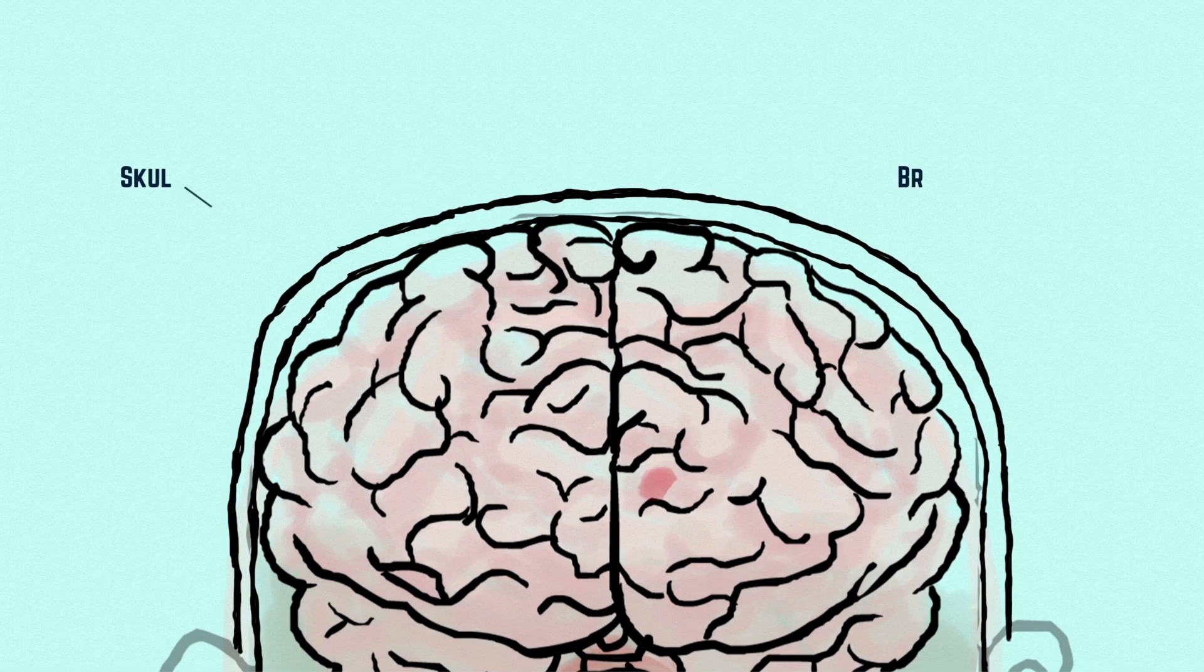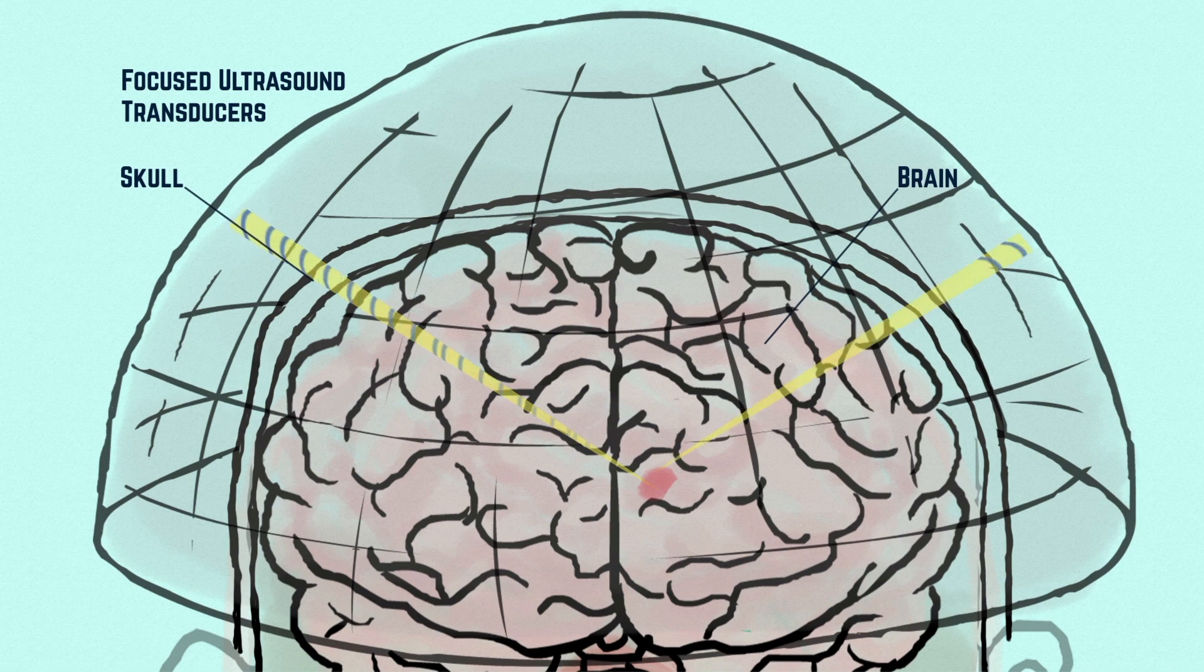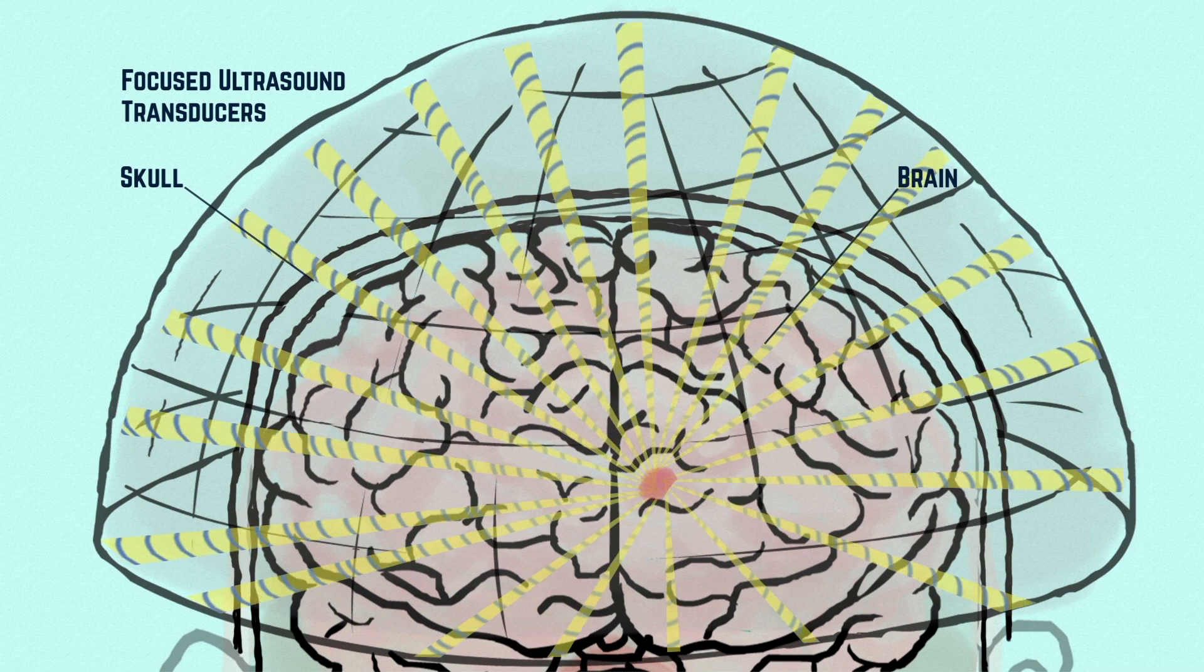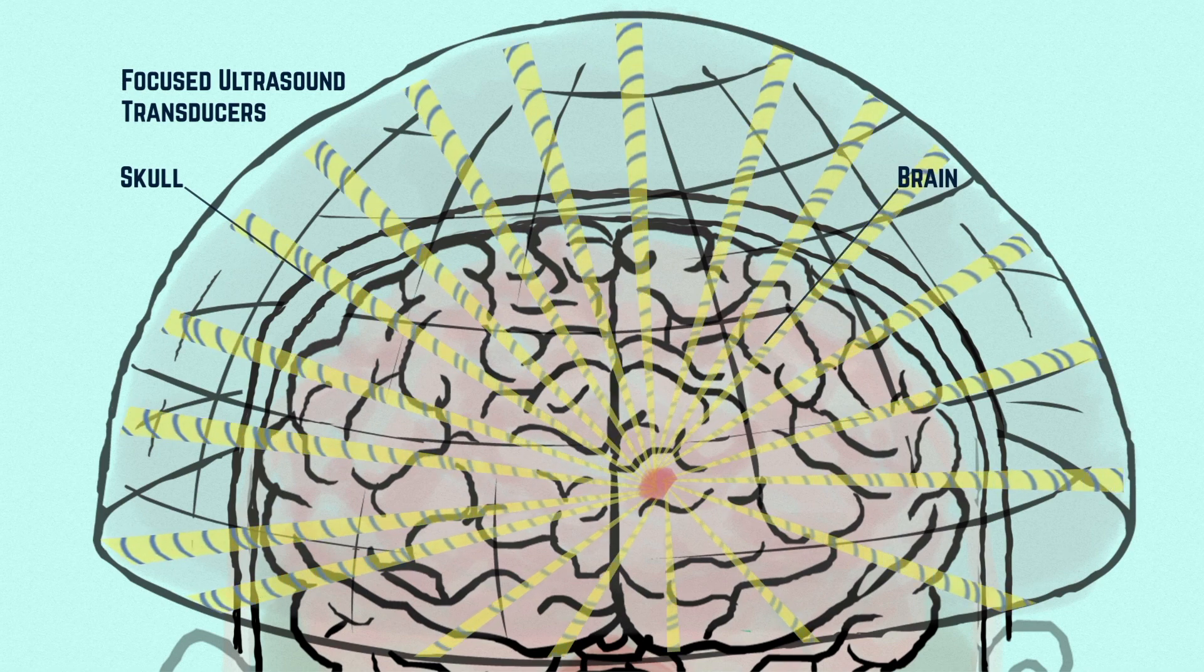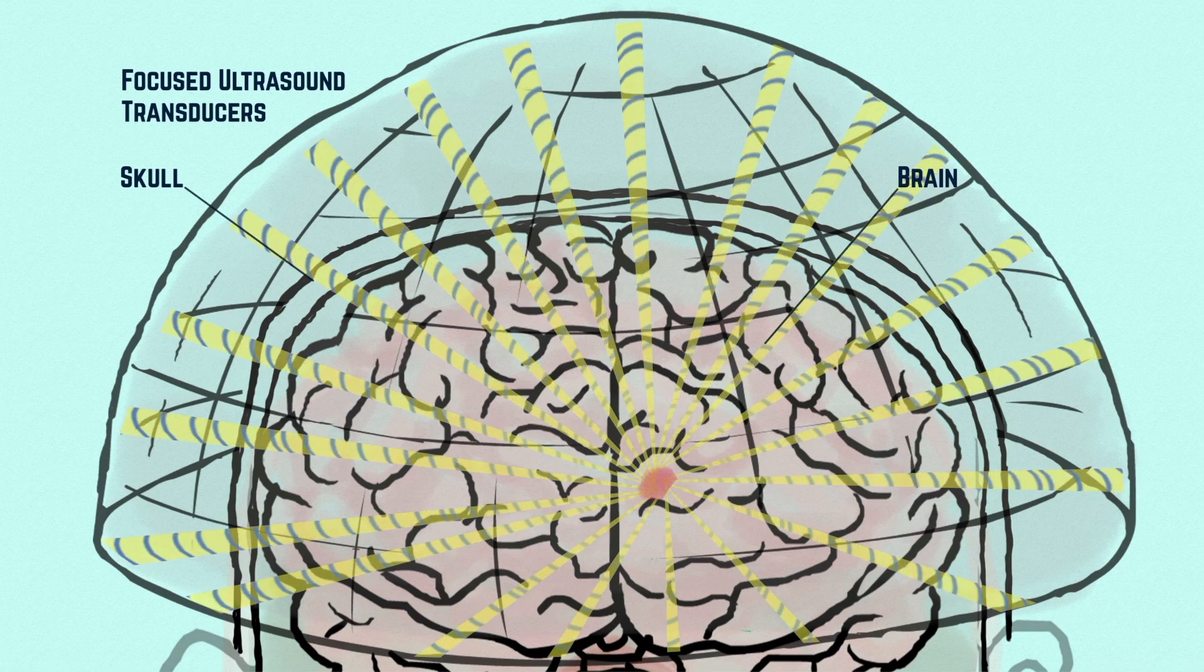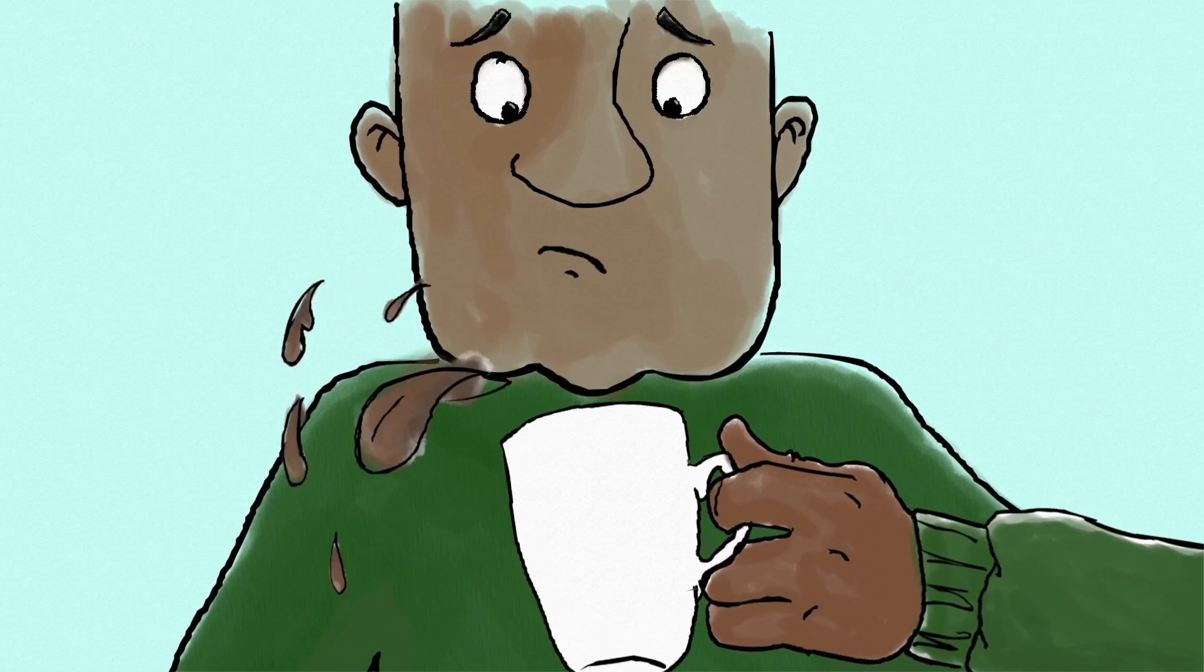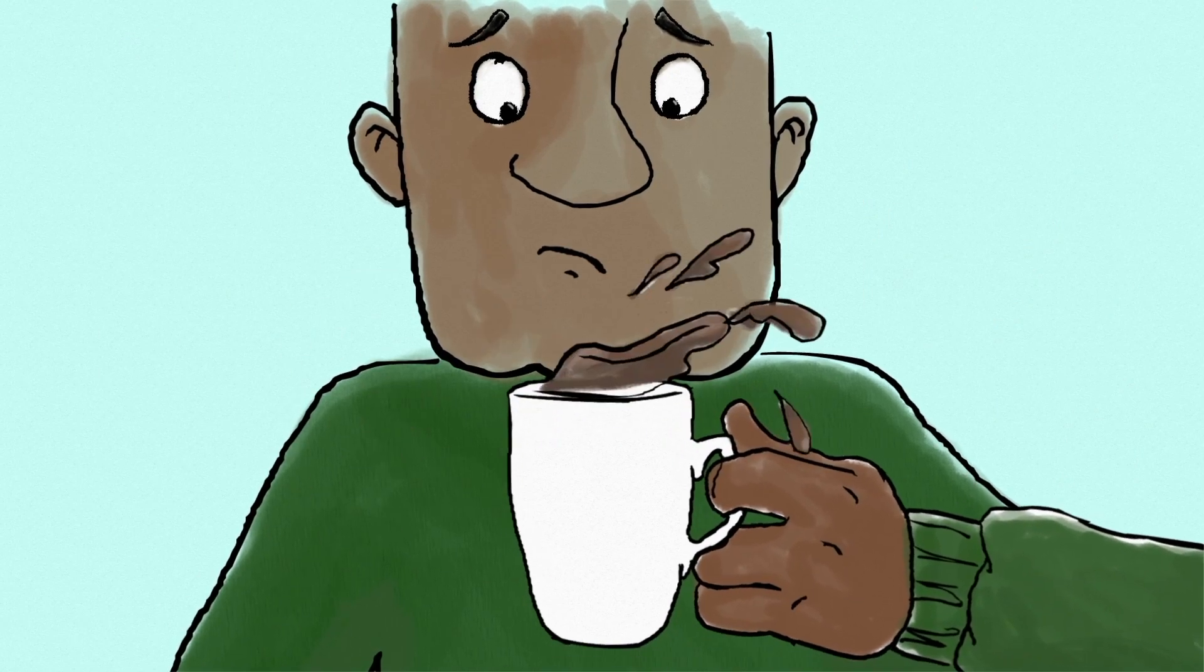But until very recently, the brain was shielded from ultrasound beams. Recent advances mean that we can now get ultrasound energy through the skull and focus it deep within the brain. This means that we can destroy the region of the brain that's responsible for the shaking of the hands that some people experience, a condition known as essential tremor.